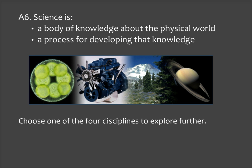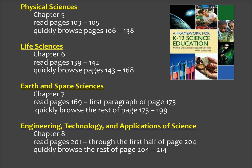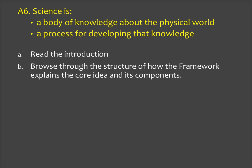Choose one of the four disciplines in the framework to explore further. The disciplinary core ideas for each of the four disciplines are in chapters five through eight of the framework. You're going to read the introduction to the disciplinary core ideas for the discipline that you choose, and then quickly browse the rest of the chapter. Pause the video as you locate the section of the framework that you will explore. Then read the introduction to the disciplinary core ideas for the discipline that you chose, and browse through the structure of how the framework explains the core idea and its components.